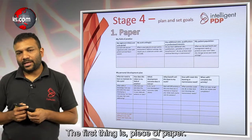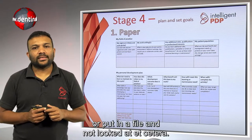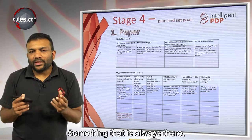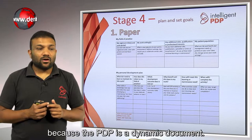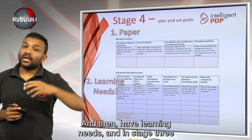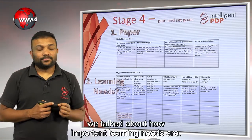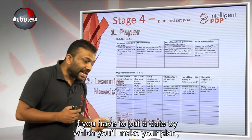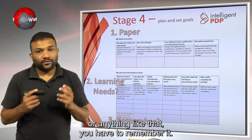The first issue is it's a piece of paper. Anything on paper can get lost or put in a file and not looked at. You want something that you're actively visiting — something that is always there, because the PDP is a dynamic document. It didn't have learning needs, and in stage three we talked about how important learning needs are. You have to remember everything, including any date by which you'll make your plan.